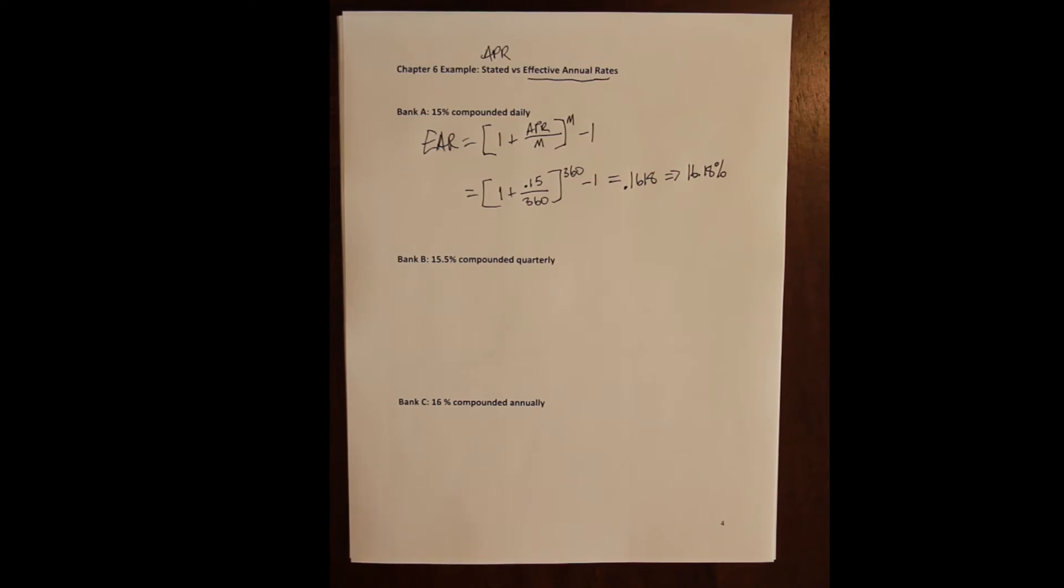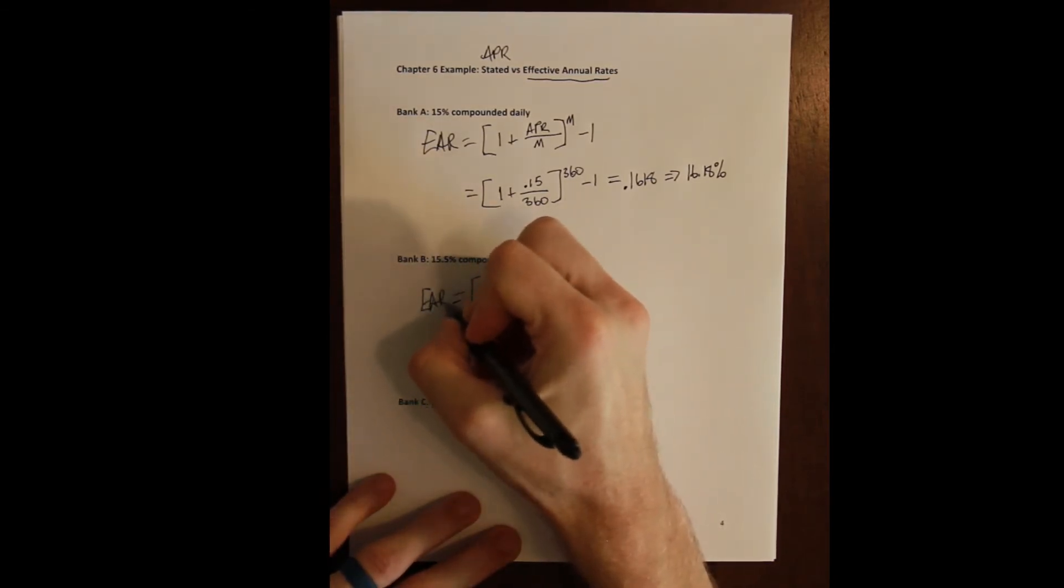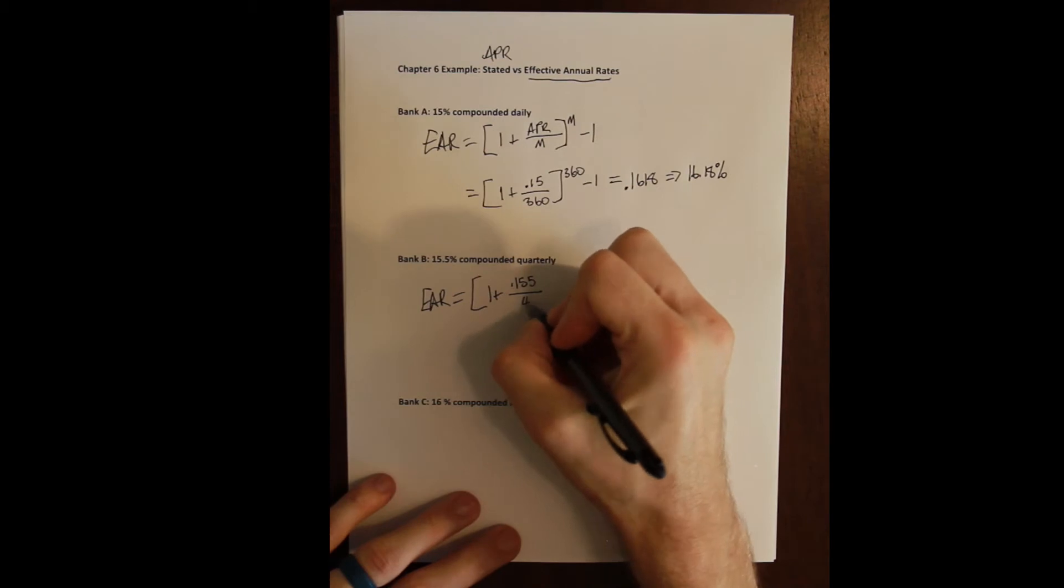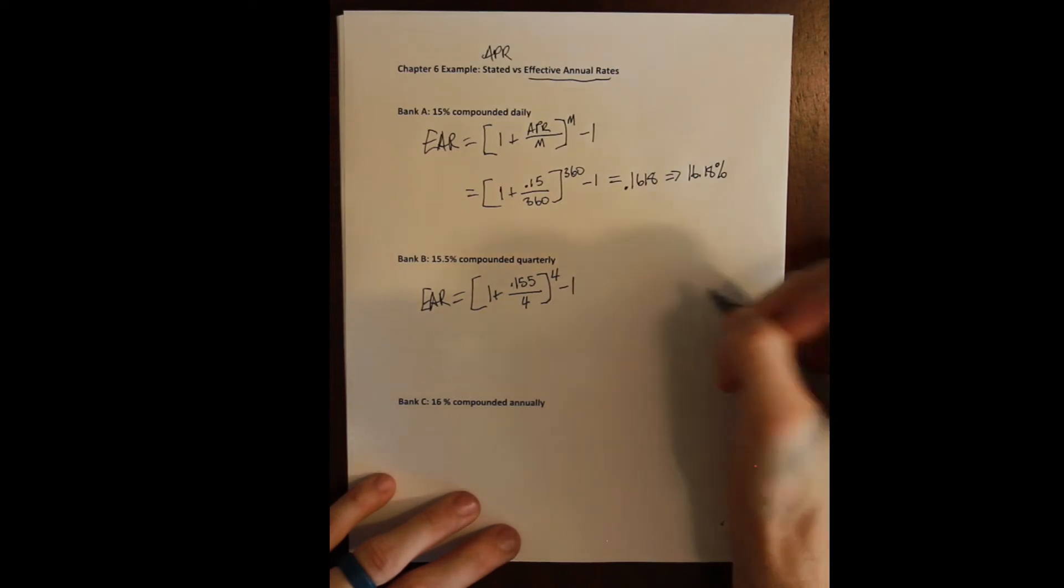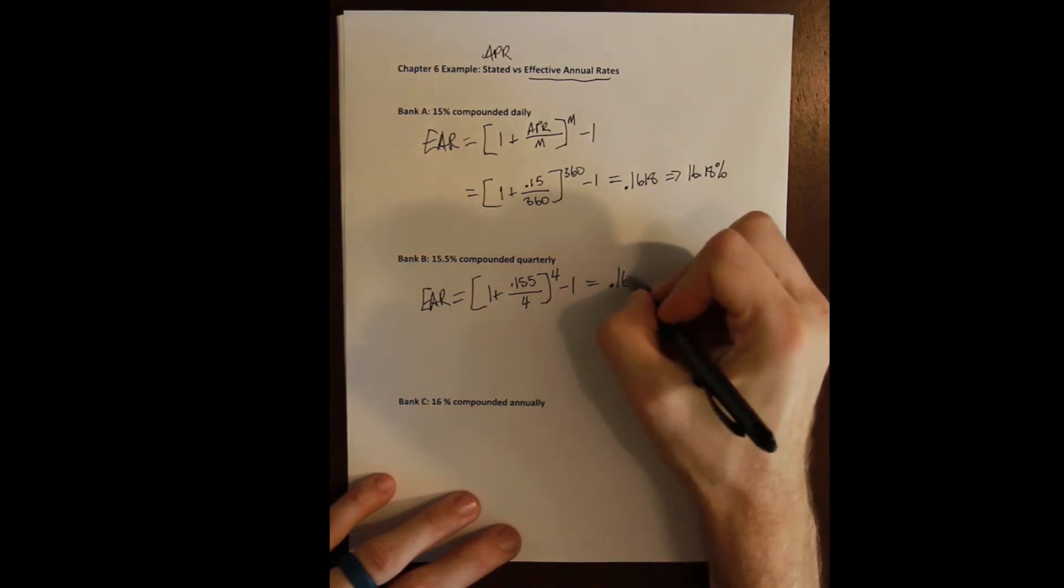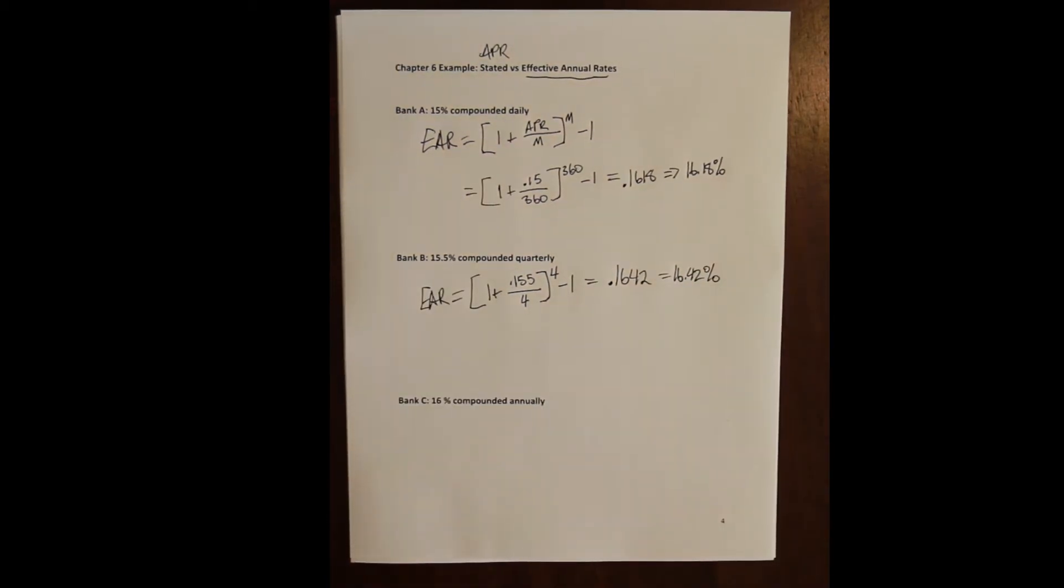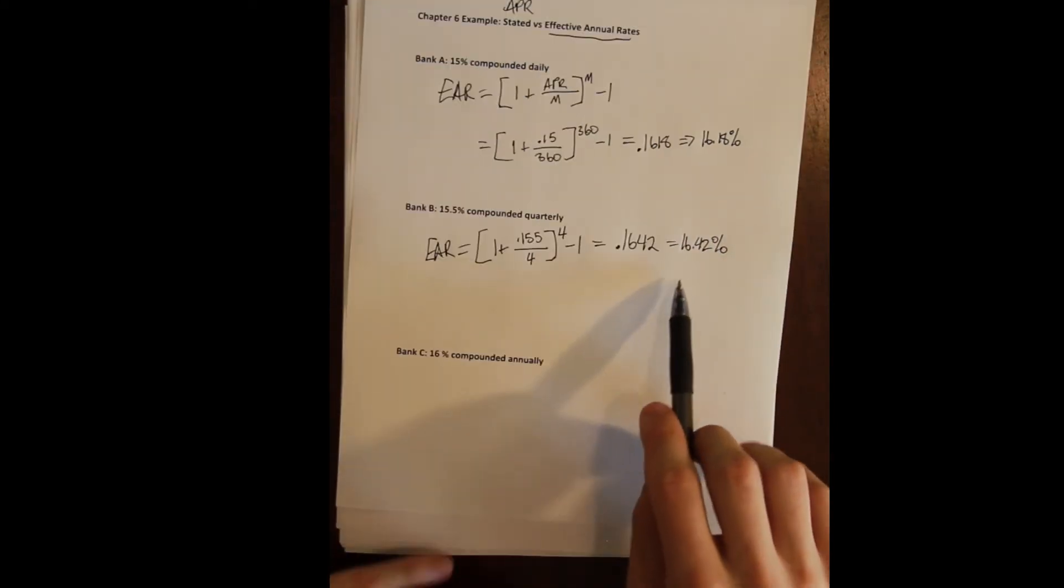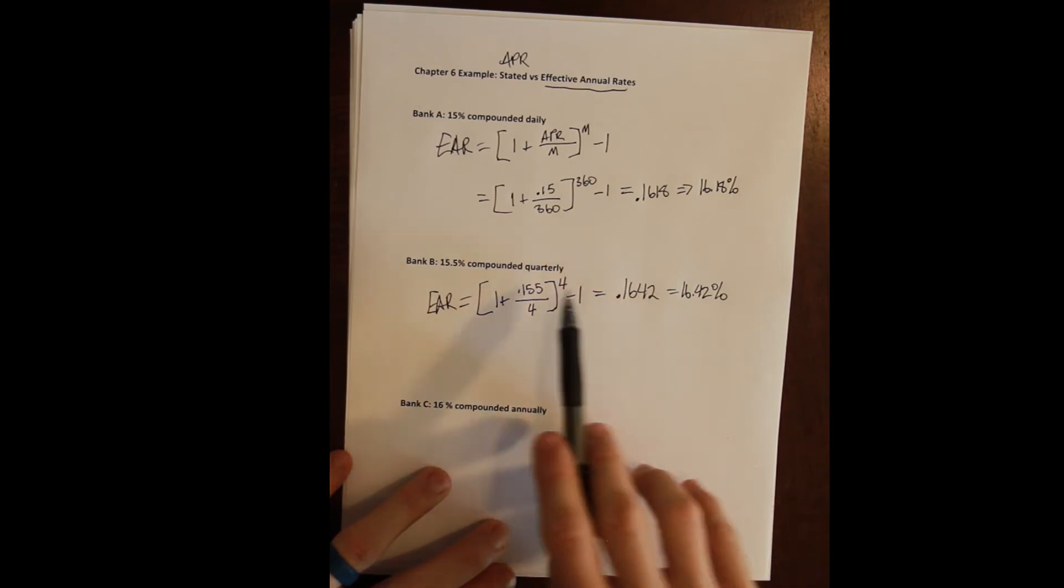On the quarterly one, we would have an effective annual rate of one plus 0.155 (15.5%) divided by the number of periods per year, four, raised to four minus one. That gives us 0.1642 or 16.42%. Even worse, right? Quarterly compounding and a slightly higher stated rate gives us an effective annual rate that is significantly higher. We're paying a full percentage point higher.